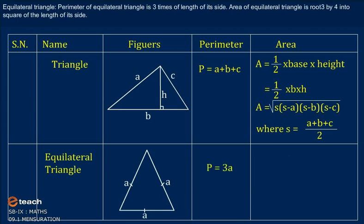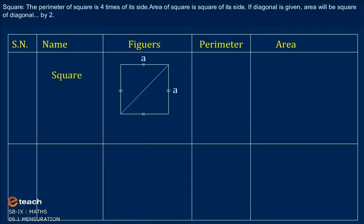Equilateral triangle: the perimeter of an equilateral triangle is three times the length of its side. The area of an equilateral triangle is (√3 / 4) × (side)². Square: the perimeter of a square is four times its side. The area of a square is the square of its side. If the diagonal is given, area will be (diagonal)² / 2.